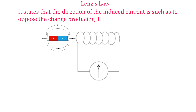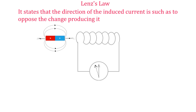When the magnet is withdrawn, the side of the coil close to the south pole becomes the north pole and attracts the south pole of the magnet — in effect opposing the change that produced it, that is the moving away of the magnet, as Lenz's law states. The induced current will then be in the opposite direction to that when the magnet was approaching.